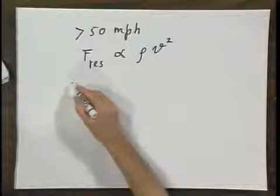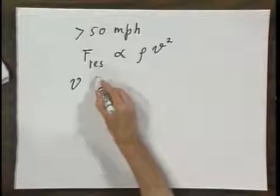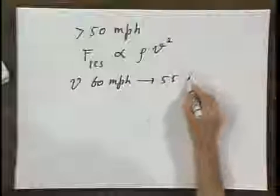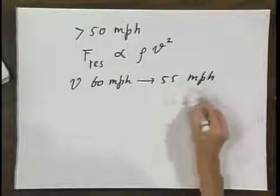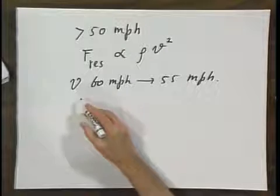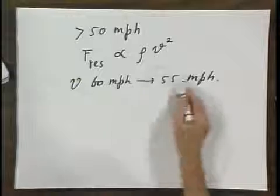Now if you go from 60 miles per hour, down to 55 miles per hour, that is a decrease in the velocity, the decrease in the speed I should say, of 10 percent, very roughly.